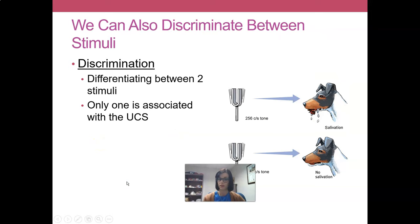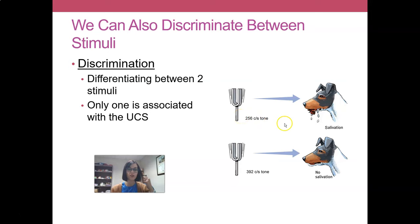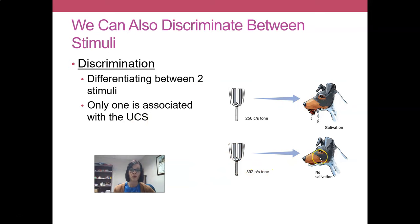We can also discriminate between stimuli. Discrimination is basically differentiating or noticing a difference between two types of stimuli. For example, we present a tone at about 256 cycles per second — 256 hertz — which is what the dog was originally trained on. That dog will salivate and produce the conditioned response. On the other hand, if I present a 392 hertz tone, you get no salivation. The dog has learned that certain tones are associated with the unconditioned stimulus, but this higher pitch tone is not, and as a result the dog will not salivate.